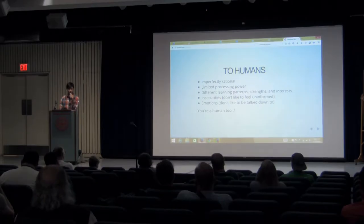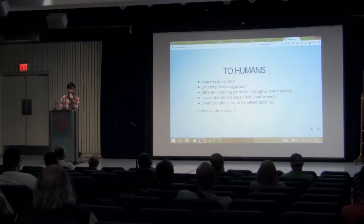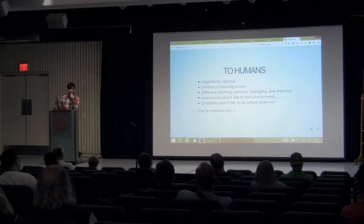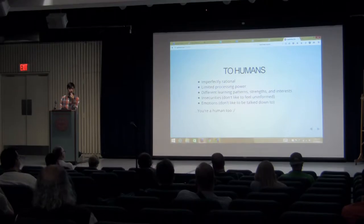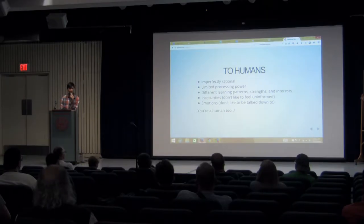Humans are imperfectly rational, have limited processing power, and are very different. Some people love technology, some are afraid of it — probably most people. Humans don't like to be stupid. They don't want to be the one to ask the question when everybody else seems to be nodding in agreement, even if everybody else is feeling the same way. It's the emperor has no clothes problem. Humans have emotions. They don't like to be talked down to or to constantly feel like they're playing catch-up.